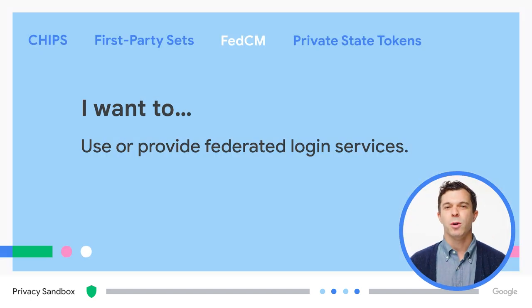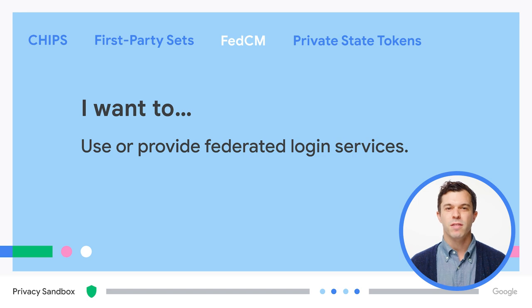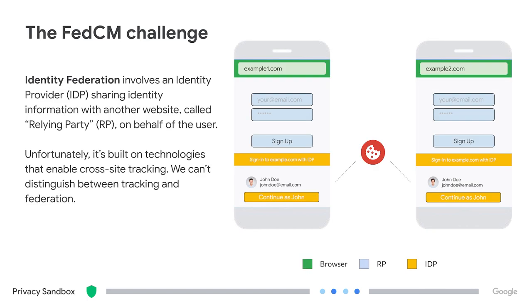The third API I want to discuss is FedCM, or Federated Credentials Management. FedCM has a great specific focus: Federated Identity. Federated Identity means having an identity provider that shares information about the user with one or more third-party websites called relying parties. In most cases, a user has an account at the identity provider and the information is then shared with the website for login. Some of the most common providers are Login with Facebook, Login with Google, Twitter, Apple, etc.